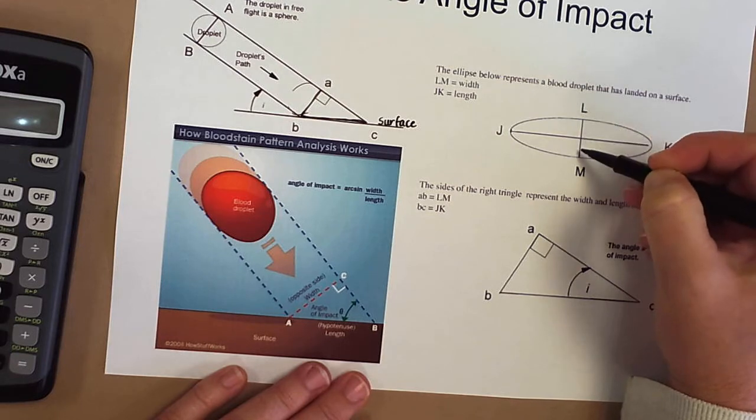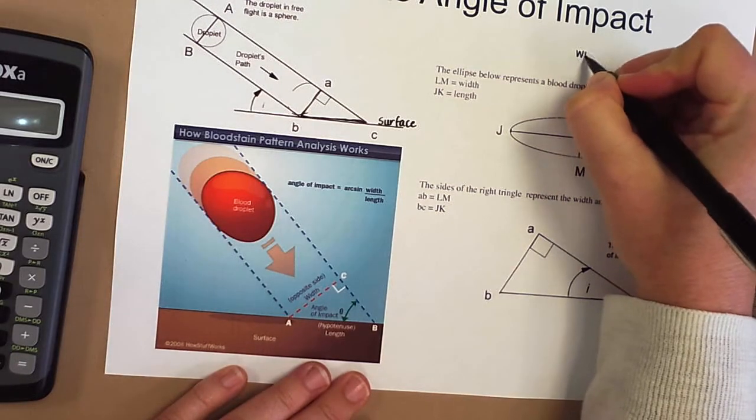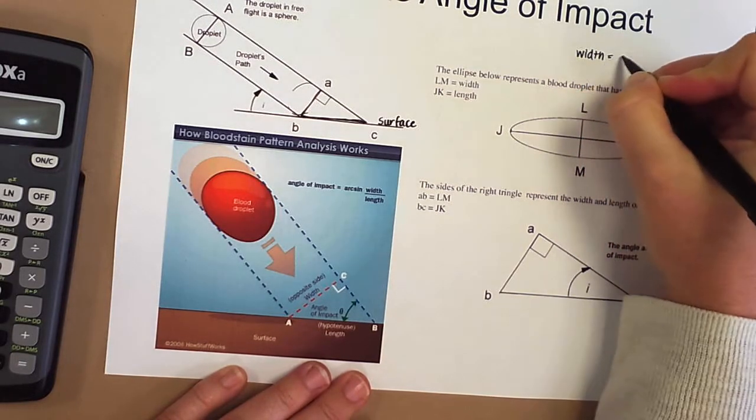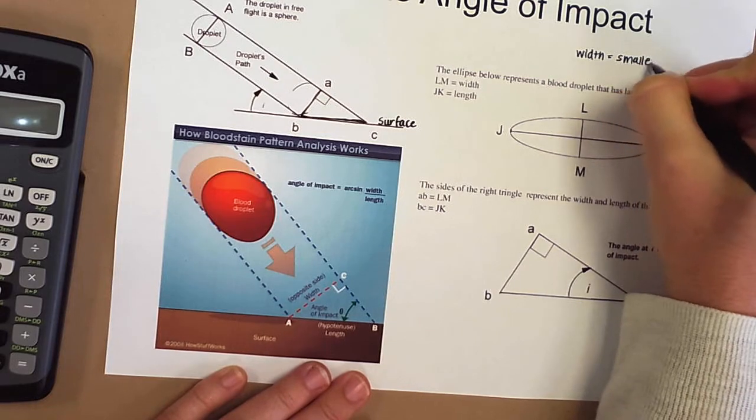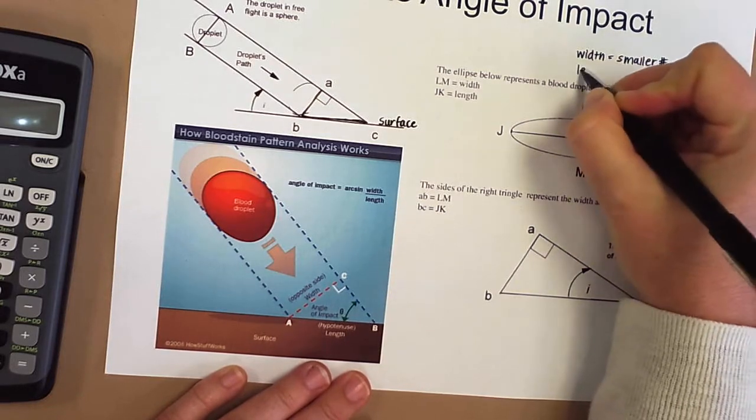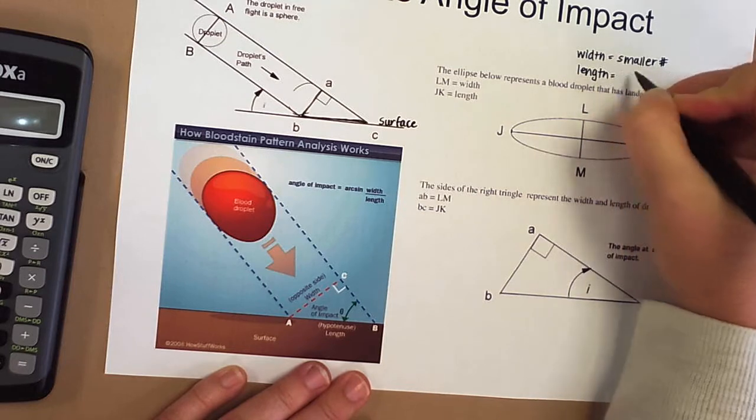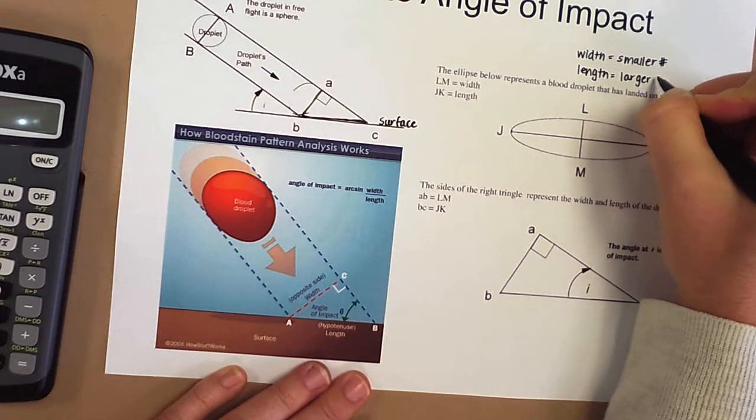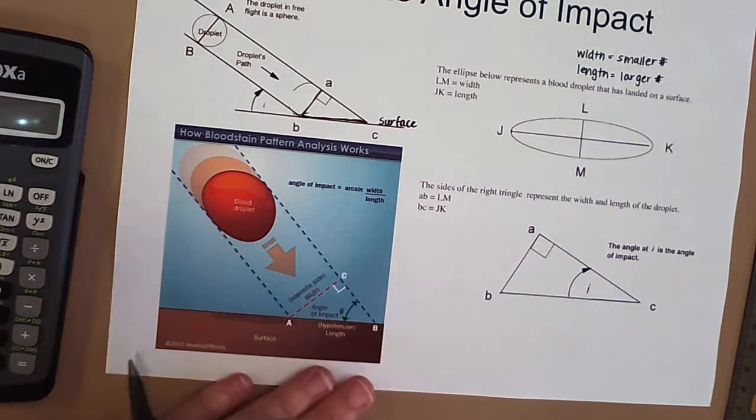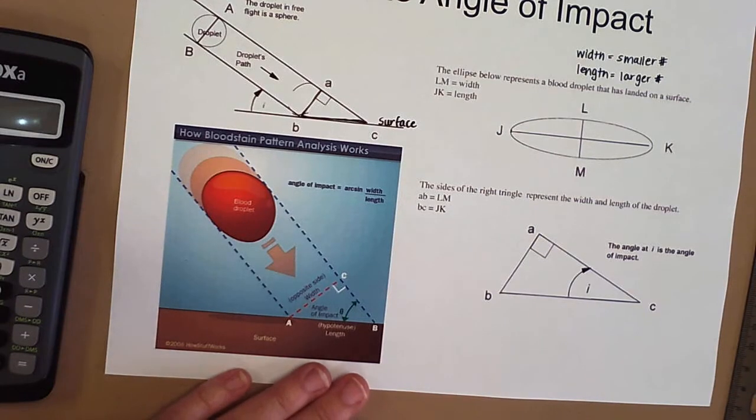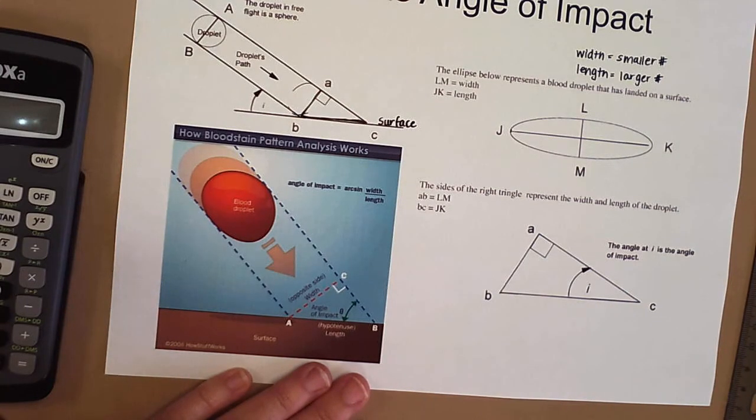We have what's called the width—remember, the width is always the smaller of the two numbers—and then the length, which is the larger of the two numbers. The closer you get to 90 degrees for the angle of impact, the more those numbers are going to be very similar. So you have to be extremely precise in your measurements. You have to be very critical with the ruler and making those measurements.